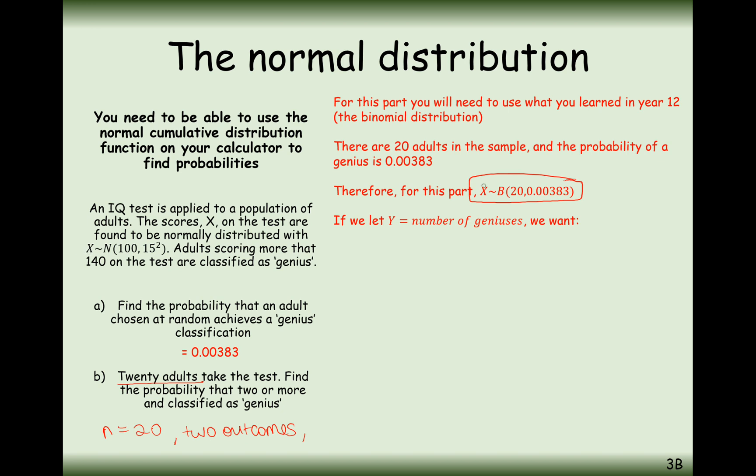This is our binomial distribution. If it were up to me, I would have used a different letter here other than x, maybe y, to not get confused with those distributions. Let y be the number of geniuses. We want to calculate y is greater than or equal to 2. For the normal distribution, it's difficult to calculate from a certain amount of successes and upwards. The way we do it on the calculator is to work out the number of successes or fewer, and then do 1 minus it.